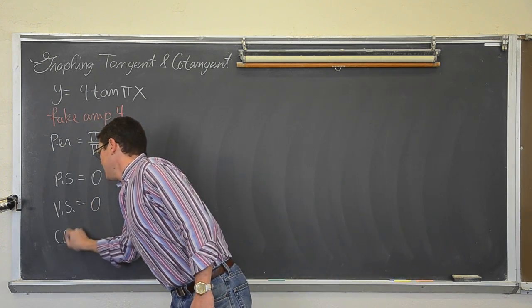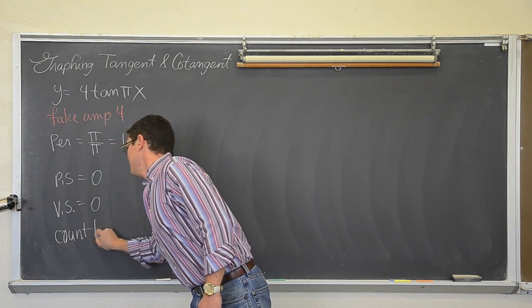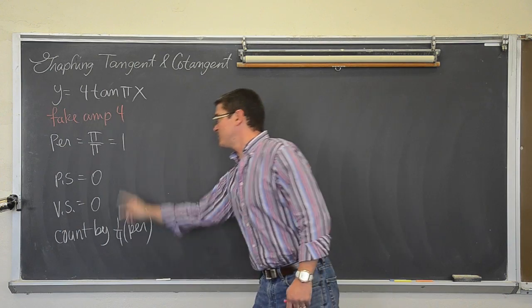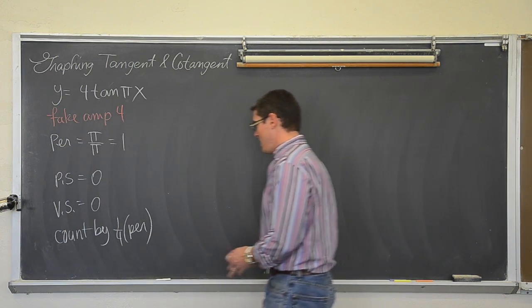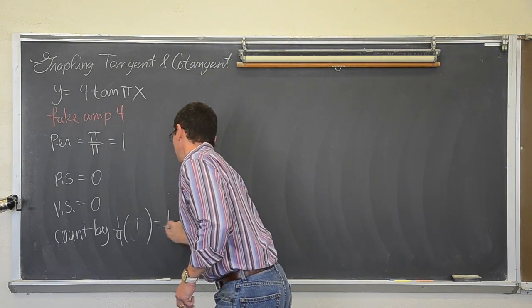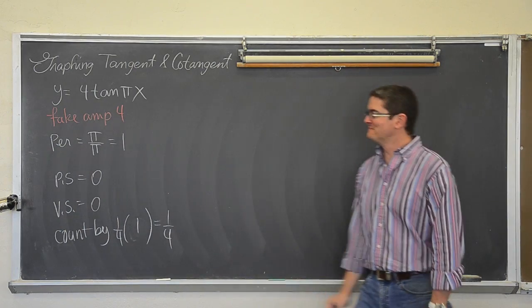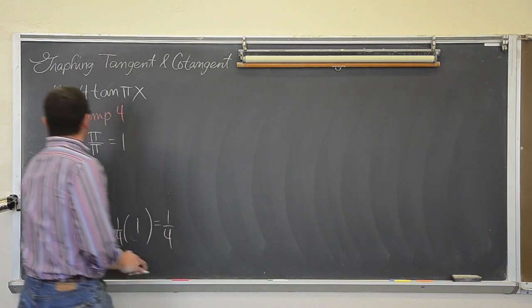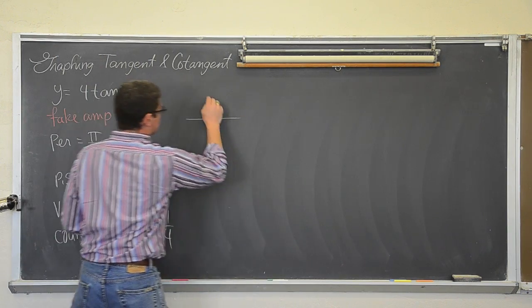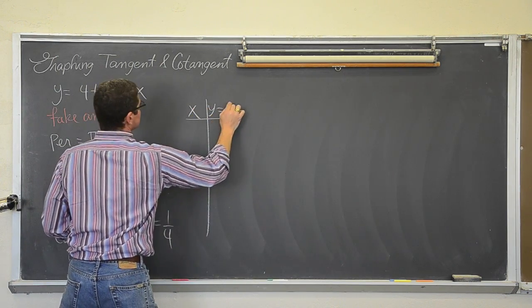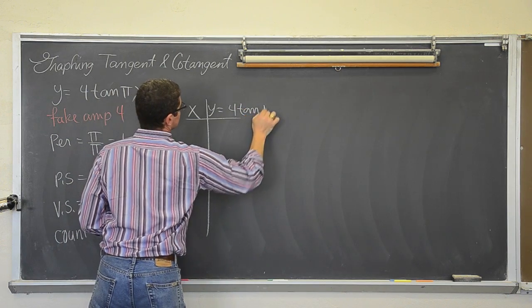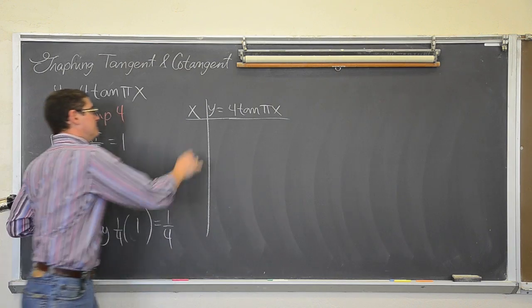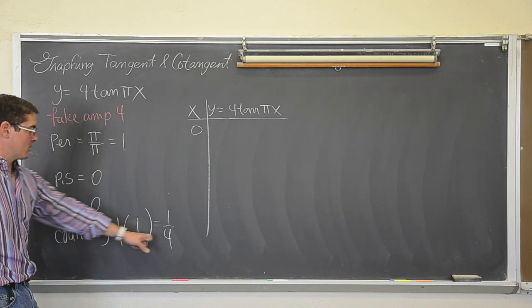We always count by one-fourth of the period, and the period for this graph is 1. So we are counting by a quarter. Let's set up our t-table by starting at the phase shift and counting by a quarter of the period.